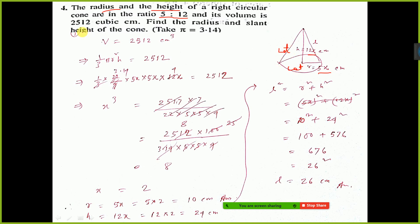Now see, volume is 2512 given in the question. So, for volume you write the formula, then you write the value of r. So r is 5x, r square, so again 5x you have to give, and height is given 12x. Now, value of pi is there, so it will be 22 by 7.